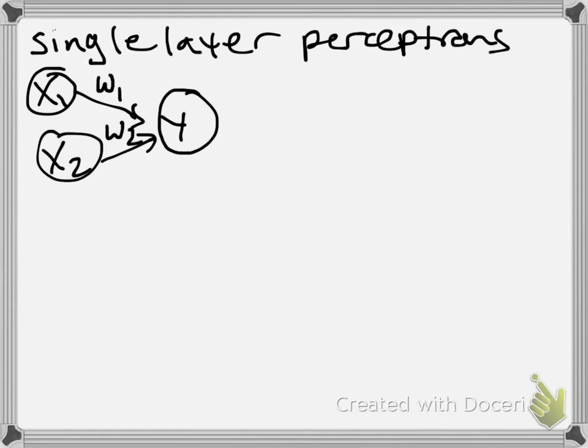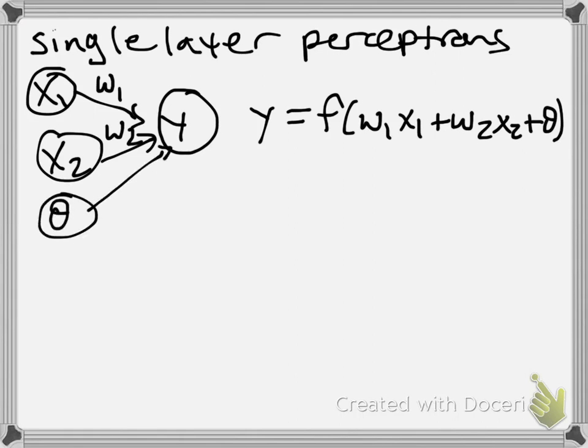So this is probably one of the simplest possible perceptrons you could write down, where y is an output neuron that takes as inputs x1 and x2 and a bias, which we'll call theta.